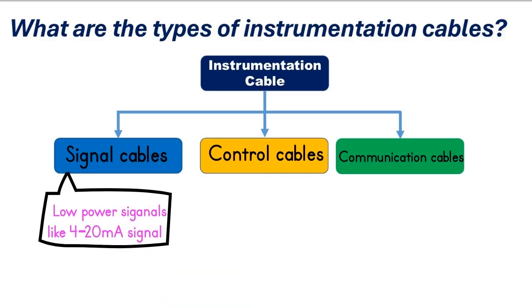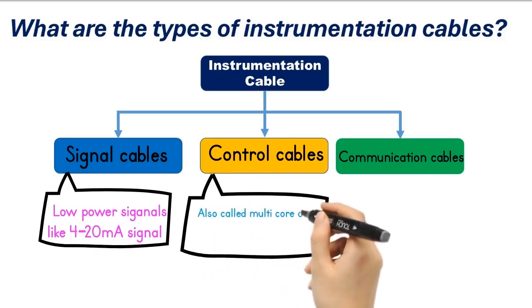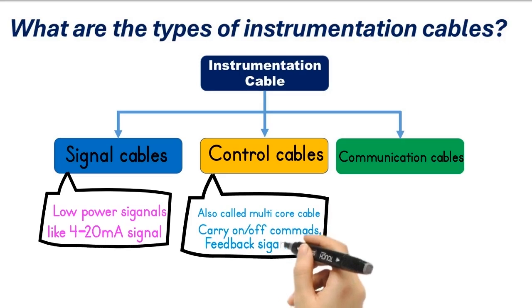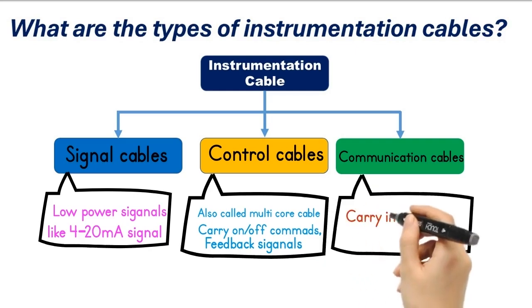Control cables, also called multi-core cables, are used to carry control signals like on-off commands and feedback signals from motors, actuators, solenoids, relays, and switches. Communication cables are used to carry information within a network of control systems, instruments, VFDs, and monitoring devices.